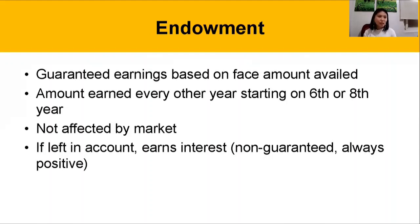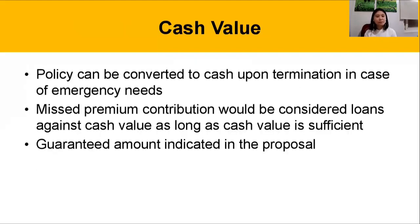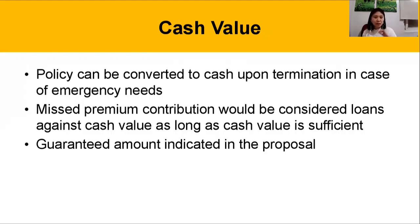Imagine you have a plan where you put in for 10 years, but in the 6th year, you start receiving it. And when left in the account, it also earns interest — always remember the interest is non-guaranteed but always positive. Finally, we have the cash value. Most traditional plans have a cash value. Basically, this is the amount you will get if you decide to convert your policy to cash upon termination. When we say convert to cash, we're done with the plan — we don't want the protection benefits anymore and want to get the corresponding cash value of those benefits.